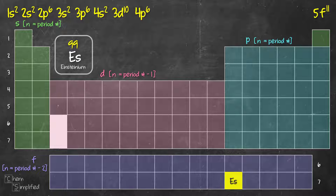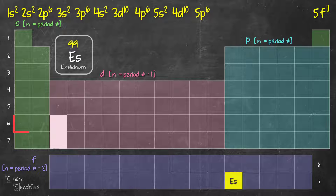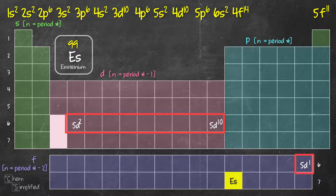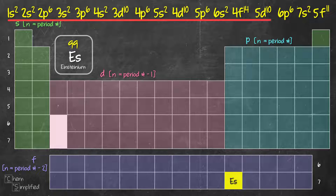Continuing to period 5: 5s2. Then the D block again — minus 1 — giving 4d10. Then back to the P block: 5p6. Period 6: 6s2. Then the inner transition F block, which is minus 2, so 6 minus 2 equals 4f — and there are 14 elements: 4f14. Then the D block in period 6: 6 minus 1 equals 5d10. Then the P block: 6p6. Finally, period 7: 7s2. That's the full electron configuration for einsteinium.